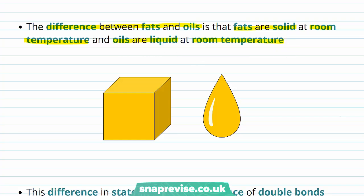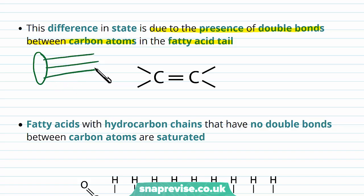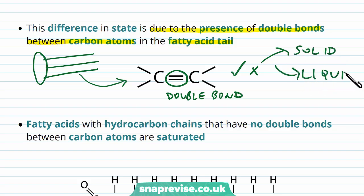A fat takes on a solid, non-changing form, whereas oils are in the liquid state. The reason they're both triglycerides but each can have a different state is due to the presence of a double bond between some carbon atoms in the fatty acid tail. The triglyceride has a general structure of glycerol and three long fatty acids, and in these fatty acids sometimes between carbons we can have a double bond. The presence or absence of these double bonds dictates whether we have a solid or a liquid — a fat or an oil.